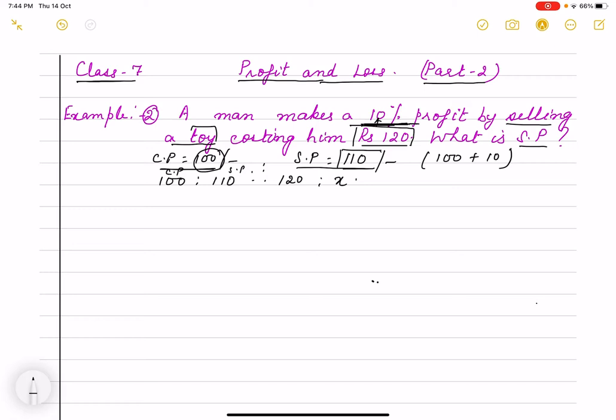See this, now we know how to solve this one. 100 by 120, cross multiply it. 100 into X is 120 into 110, that means X will be 120 into 110, and 100 will be there as it is in multiplication sign. Now we cross multiply.